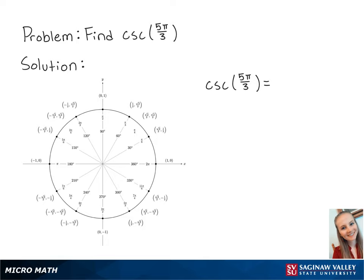For this problem, we're going to find cosecant of 5π/3. Cosecant of 5π/3 is equal to 1 over sine of 5π/3.